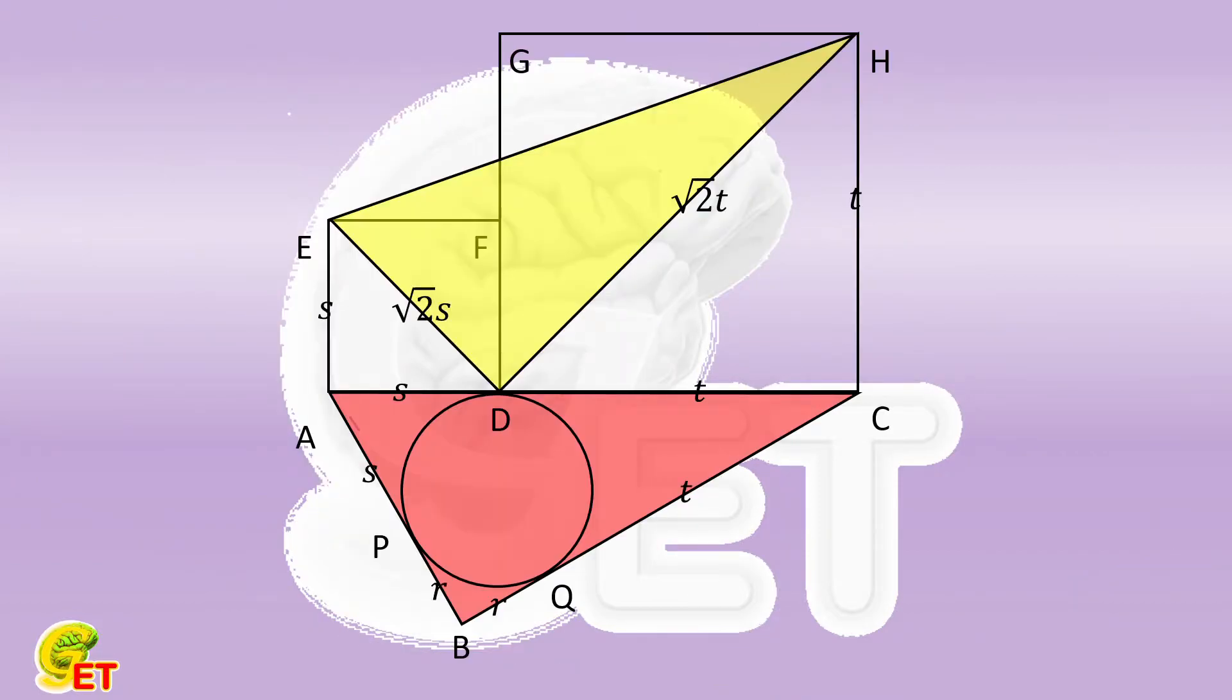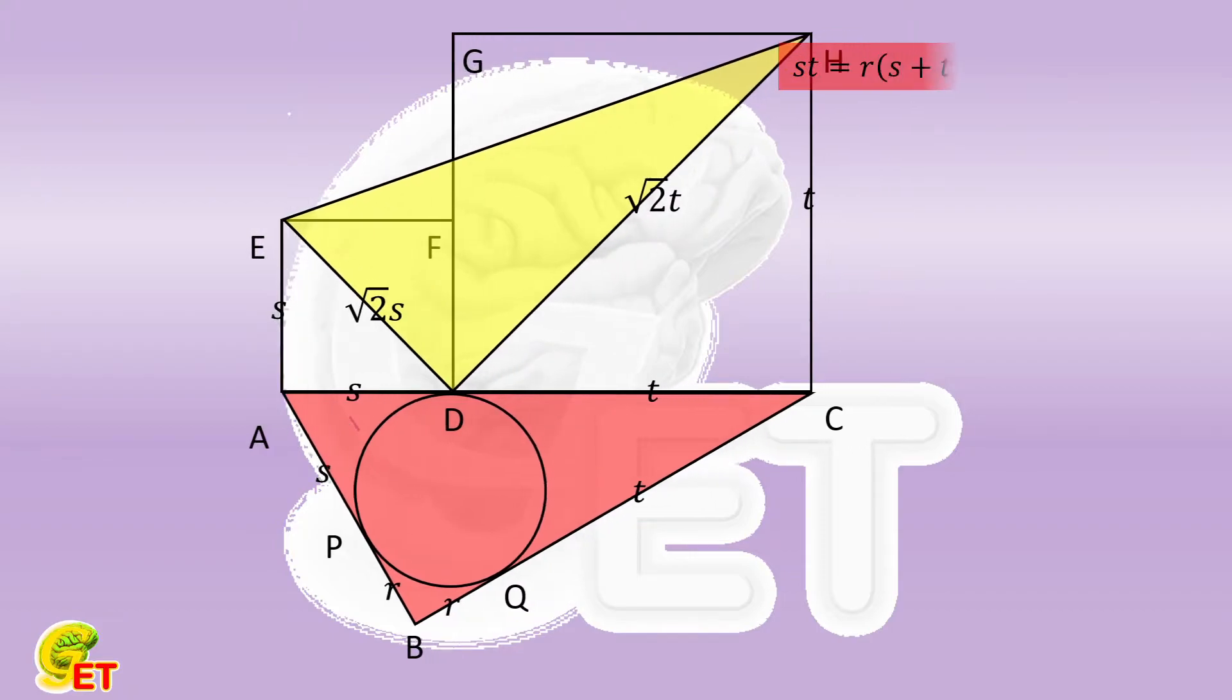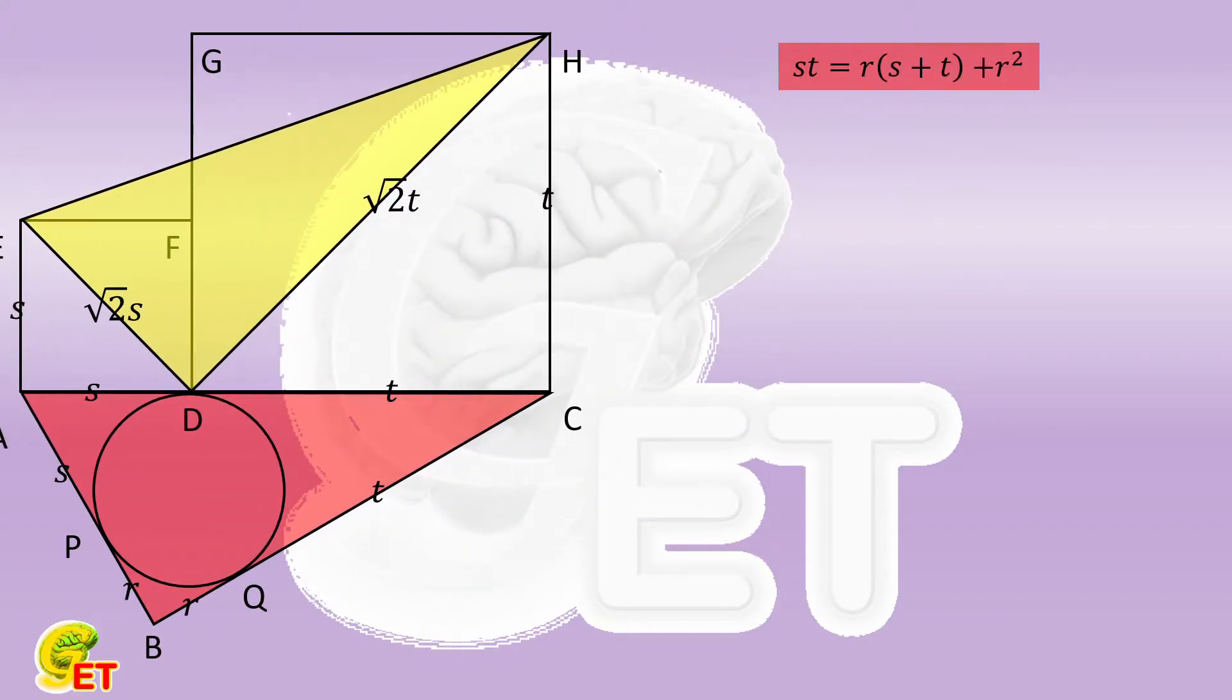By denoting the lengths in the same way, we have this important conclusion in the same form as last time. We know that S times T is the area, which is a constant. So when the summation of S and T increases, the radius of the inscribed circle, R, must decrease.